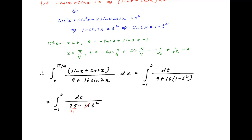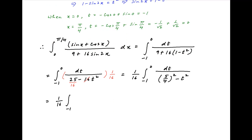Taking 16 common in the denominator, this integral can be written as 1 upon 16 times the integral from minus 1 to 0 of dt upon (5 upon 4 whole squared minus t squared), which can be rewritten as 1 upon 16 times the integral of dt upon (5 upon 4 minus t) times (5 upon 4 plus t).